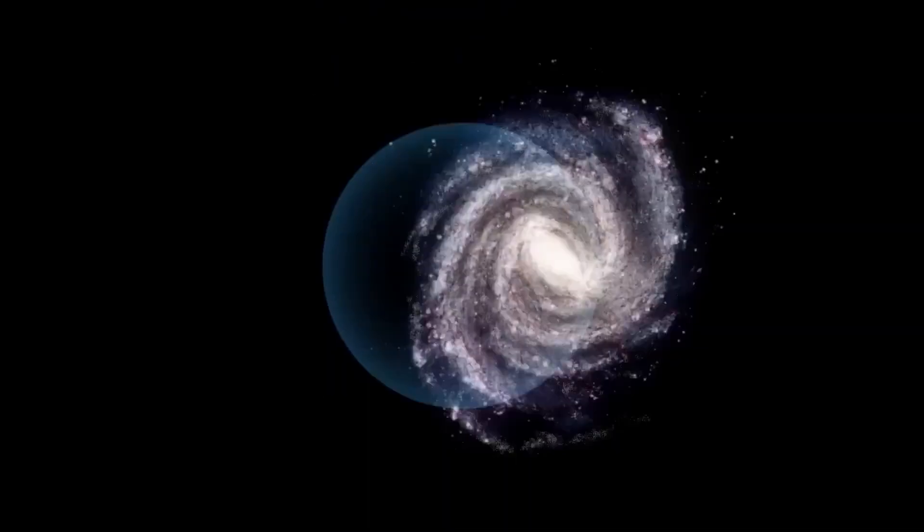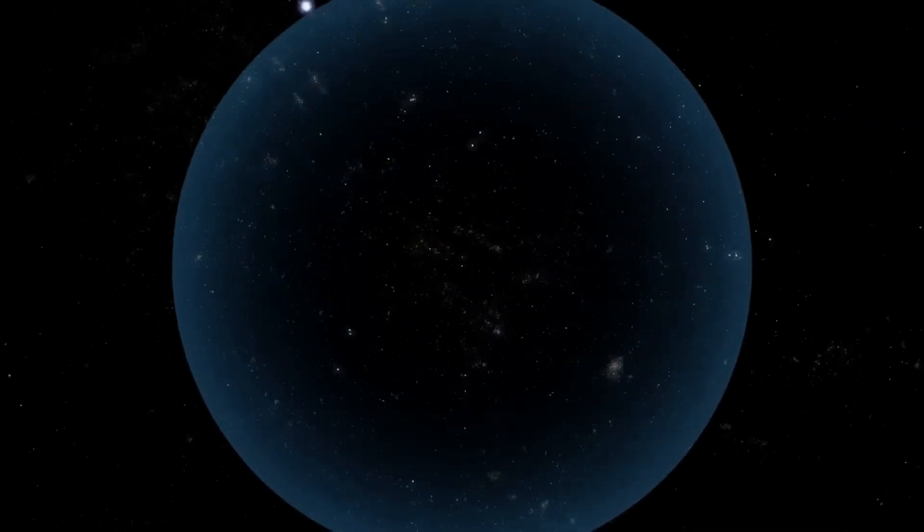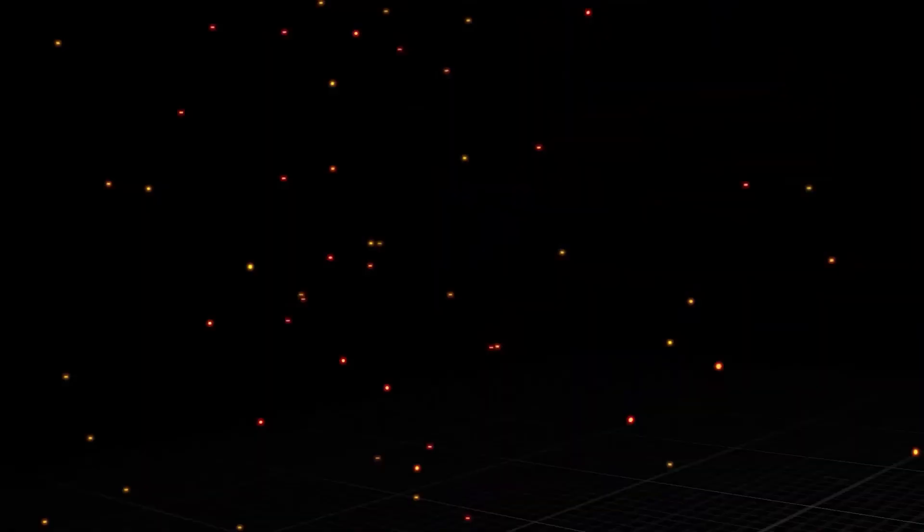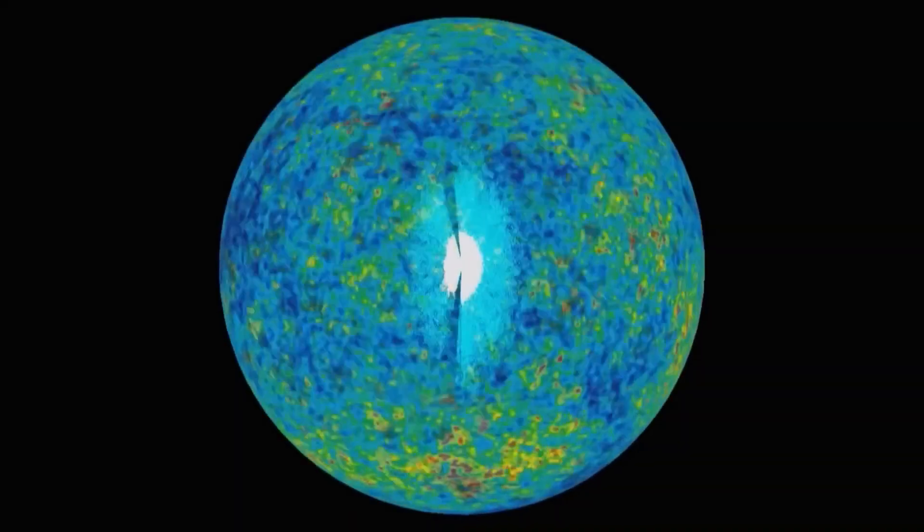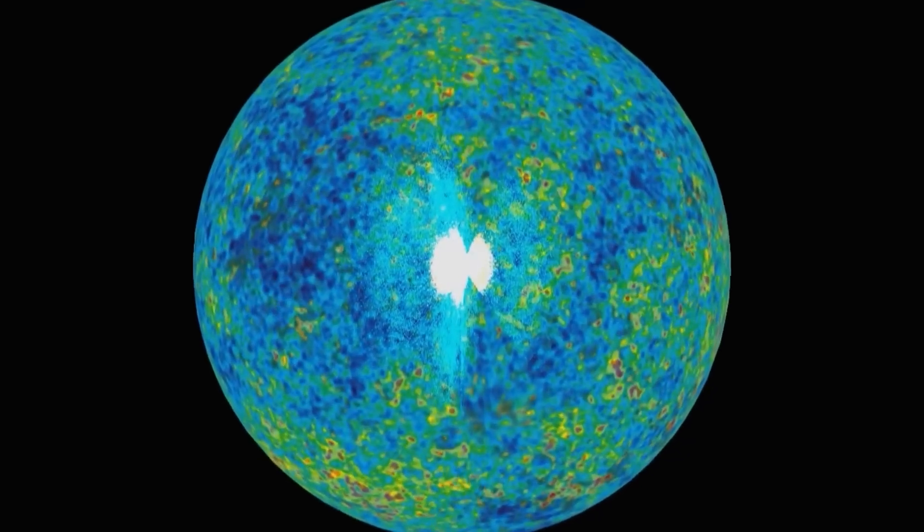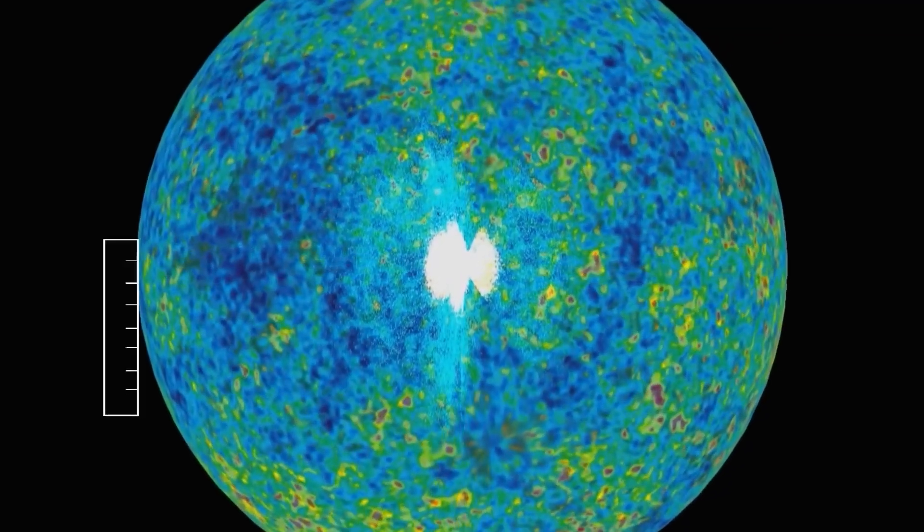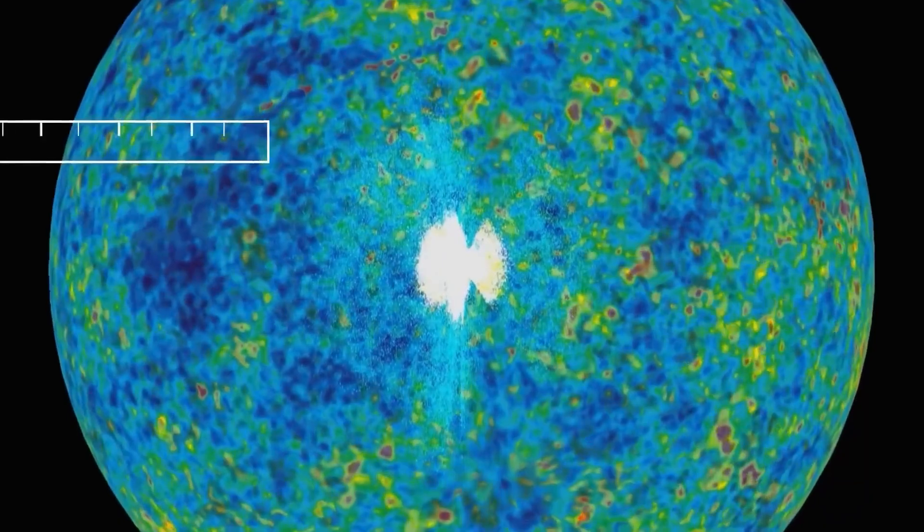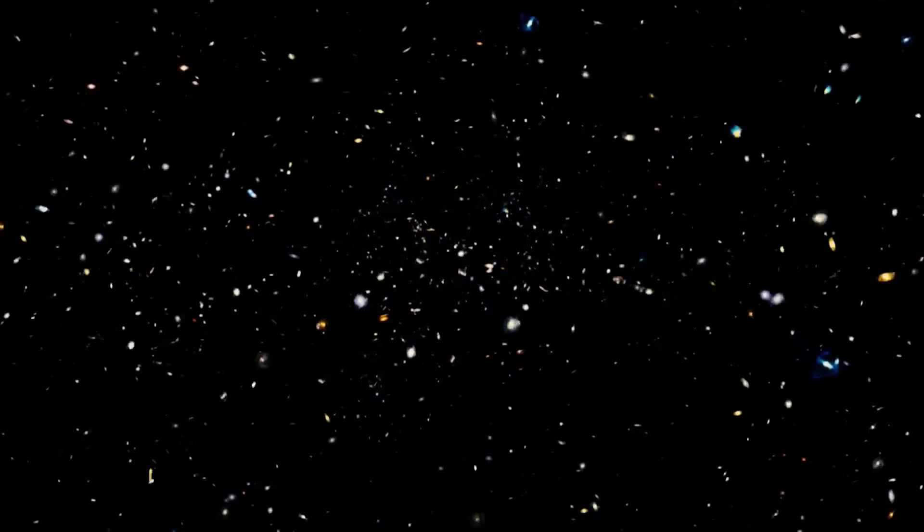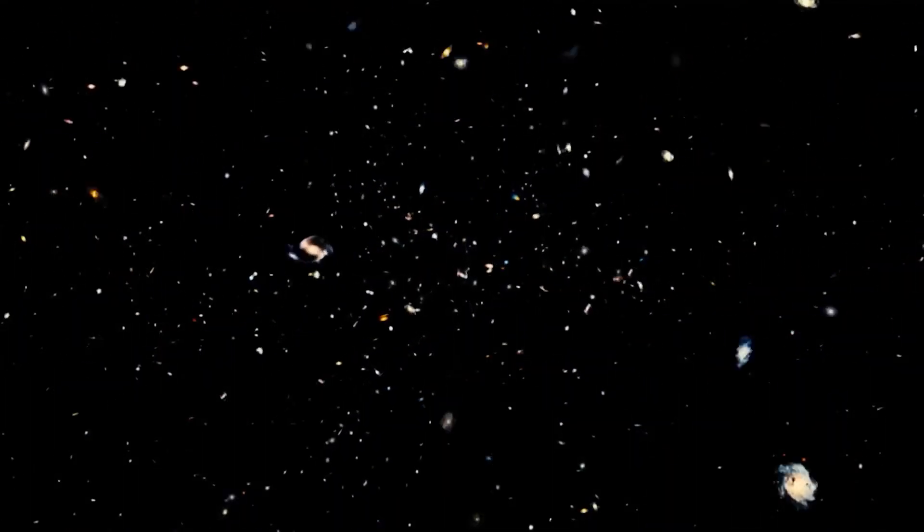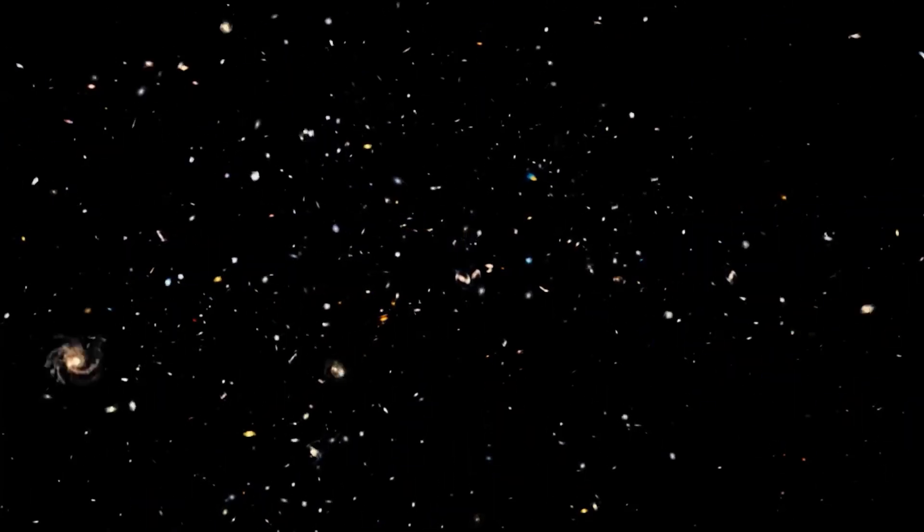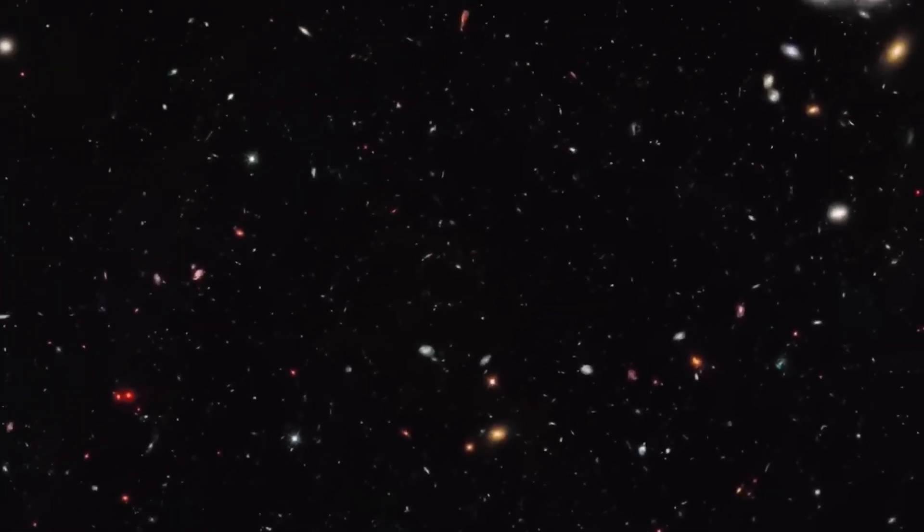FLAMINGO goes beyond considering gravity alone. For while dark matter makes up most of the mass of the universe, ordinary matter, despite representing only one-fifth of the total mass, exerts a significant influence on the distribution of matter on smaller scales. Factors such as galactic winds driven by supermassive black holes and supernova explosions can affect the formation and evolution of galaxies.